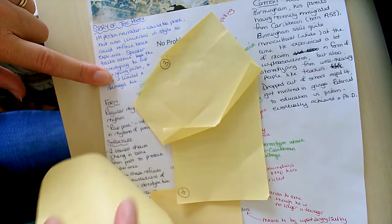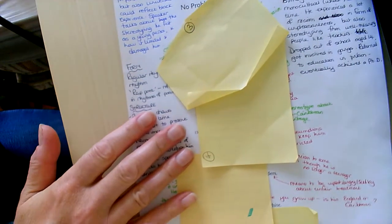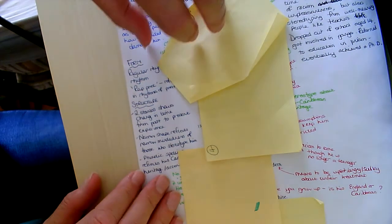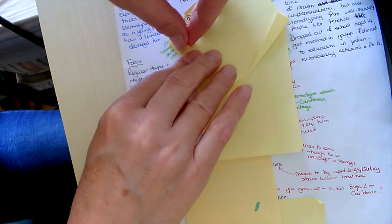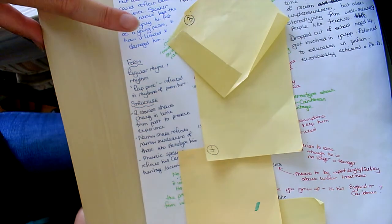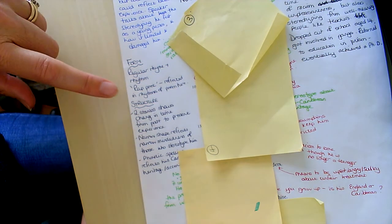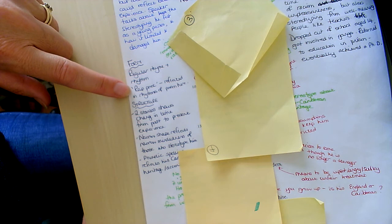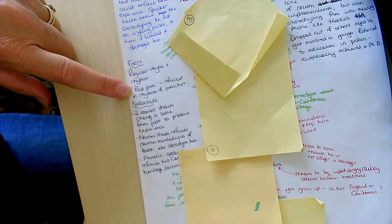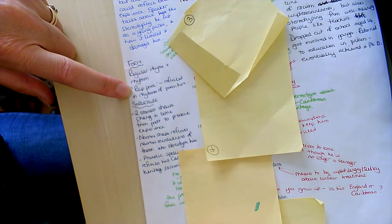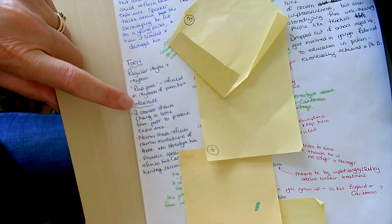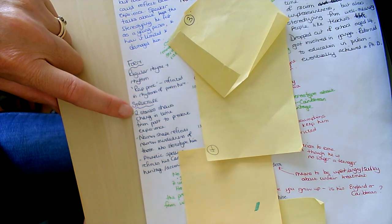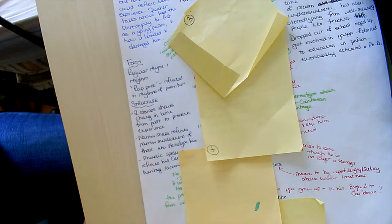In terms of form and structure, it's got this very regular rhyme and rhythm scheme. Zephaniah is known for being a rap poet, so he's very influenced by the genre of rap and you can really hear that in the rhythms and cadences of the poem.